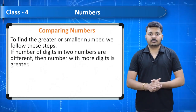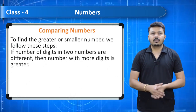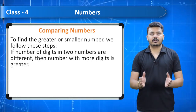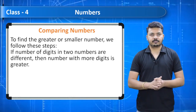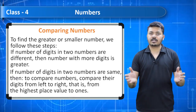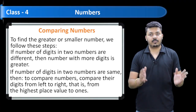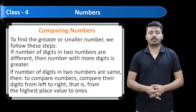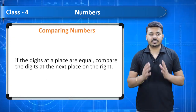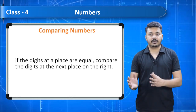Comparing numbers: to find the greater or smaller number, follow these steps. If the number of digits in two numbers are different, the number with more digits is greater. If the number of digits are the same, compare digits from left to right — that is, from the highest place value to ones. If the digits at a place are equal, compare the digits at the next place on the right.